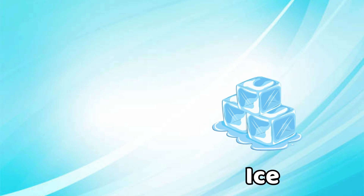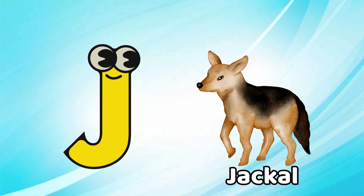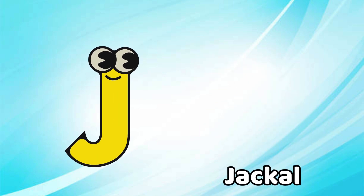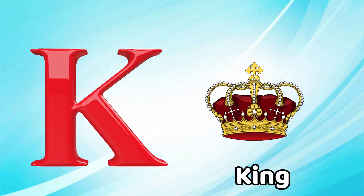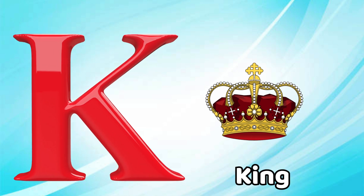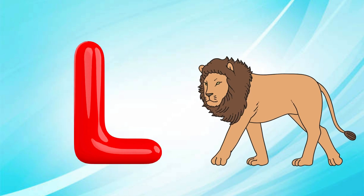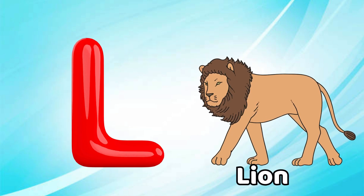I is for ice, i-i-ice. J is for jackal, j-j-jackal. K is for king, k-k-king. L is for lion, l-l-lion.